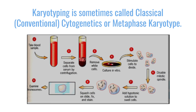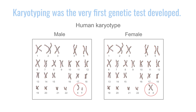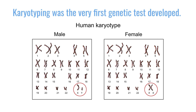We can count the chromosomes and we can look to see if they are abnormal — if they're broken or rearranged in some abnormal way. That was the very first test used to look at genetics in cancer and in multiple myeloma.